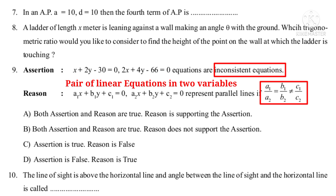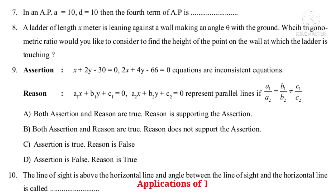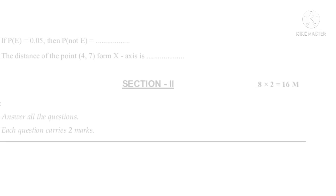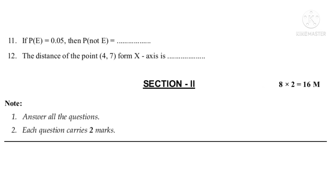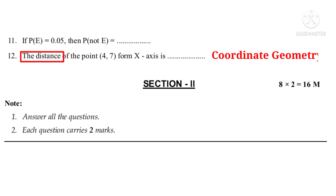Question 10: The line of sight is above the horizontal line and the angle between the line of sight and the horizontal line is called dash — from the chapter Applications of Trigonometry. Question 11: If P(E) = 0.05, then P(not E) = dash — from the chapter Probability. Question 12: The distance of the point (4, 7) from the X-axis is dash — from the chapter Coordinate Geometry.